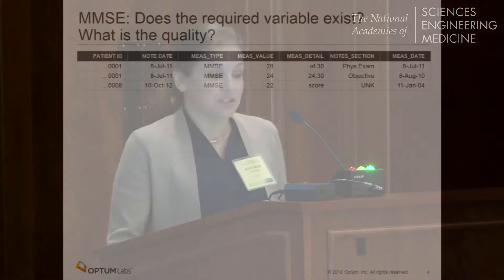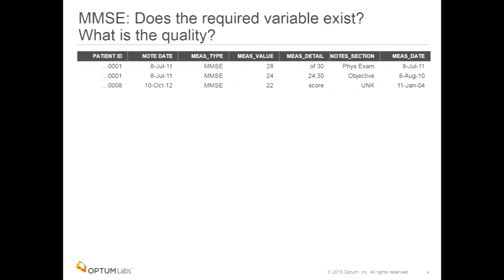Here's an example of the question: do the variables exist, and what's the quality of these variables? This is the MMSE — the Mini Mental Status Exam — a 30-question test given to patients to look at progression of dementia and Alzheimer's disease. All the data I use here is manufactured data, not real patient data, but it looks very much like this. Here are the columns we would see in a data asset: the patient ID, the date of the patient note, the type of measure (MMSE), the measure value (the score on the test), the measure detail (like units), and a notes section. MMSE is not data that comes to a structured field in an EHR data asset — this element was extracted via natural language processing from physician notes.